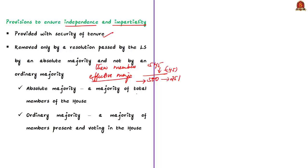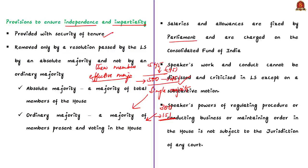This effective majority should not be confused with simple majority, which means a majority of members present and voting — for example, if 300 people are present, a majority means 151 people. But to remove the speaker, effective majority is required. Additionally, the speaker's salaries and allowances are charged upon the Consolidated Fund of India and not subjected to the vote of parliament. The speaker's work and conduct cannot be discussed or criticized in Lok Sabha except on a substantive motion, and the speaker's powers of regulating procedure or maintaining order are not subject to the jurisdiction of any court, including the Supreme Court.